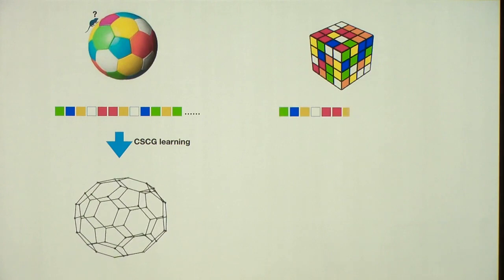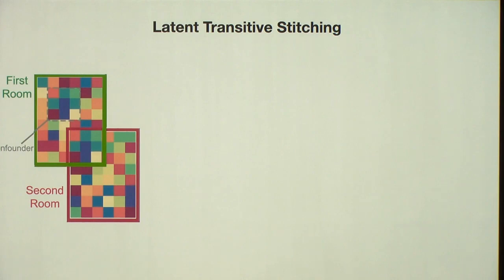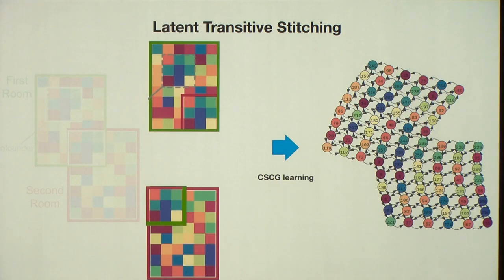Here's a rat. For some reason, it's on a soccer ball and running around and seeing local patches of observation. And again, it's a sequence of patches that you're seeing. CSCG will recover the ball. On a Rubik's cube, for some reason, the rat's running around. CSCG will again recover the layout of the room. This transitive inference task is something hippocampus people are really interested in. You show A to B, then B to C, can you infer A to C? We have a fun version of that one. Suppose you have two rooms, two overlapping rooms, and the rat is running, allowed to run only in one room or the other, never across them. And to make it even more fun, some of the overlapping patch kind of repeats in another room.